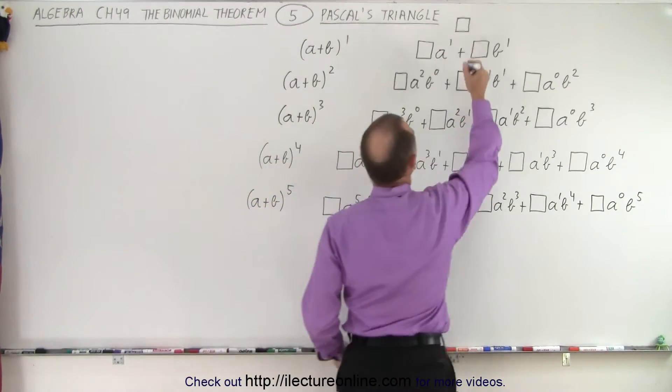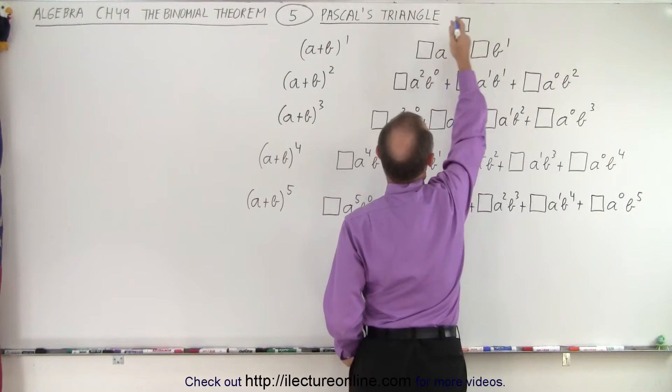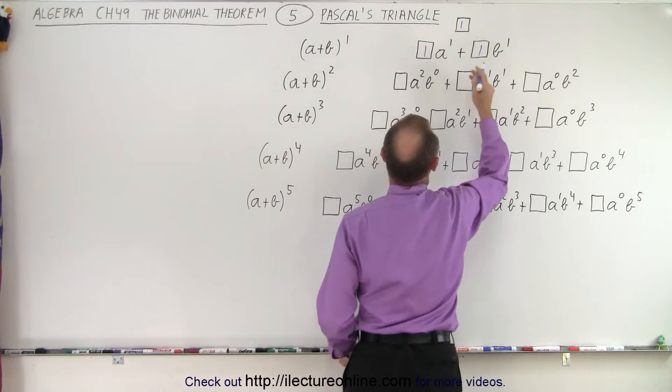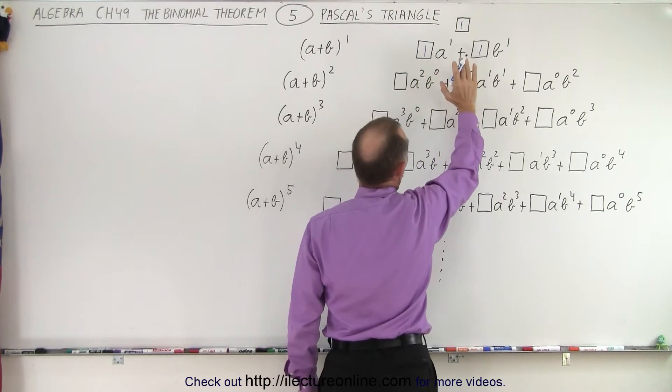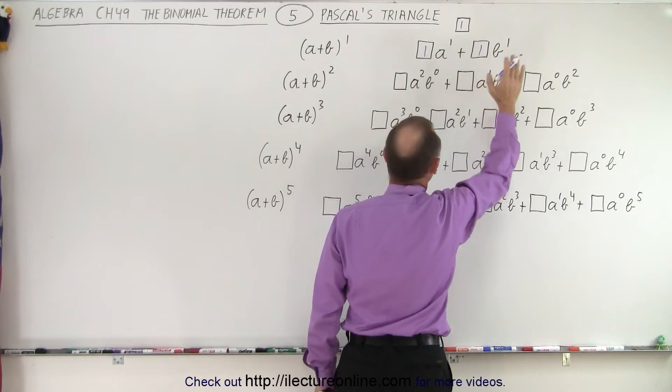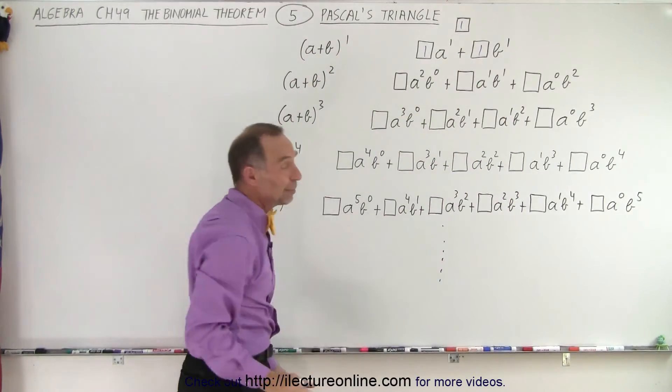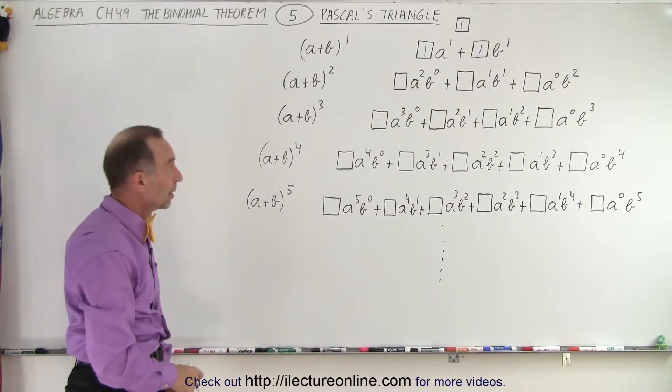So when we start with a 1 up on top, notice when we bring the 1 and bring it out here, we get a 1 and a 1, so we get 1a to the first power plus 1b to the first power, which is simply equal to a plus b to the first power.